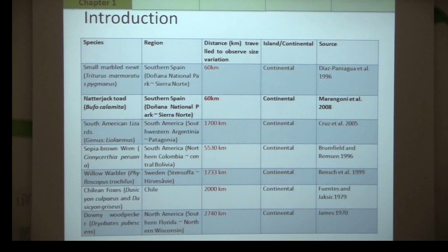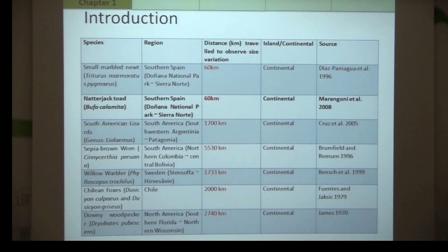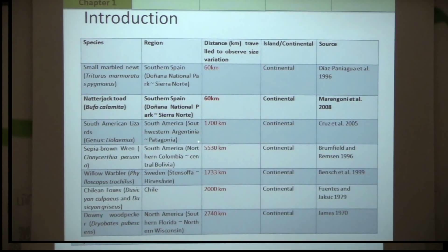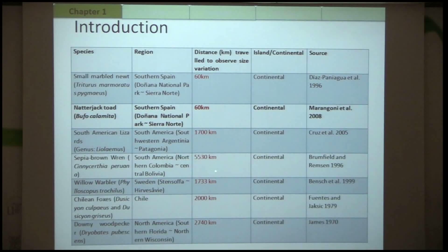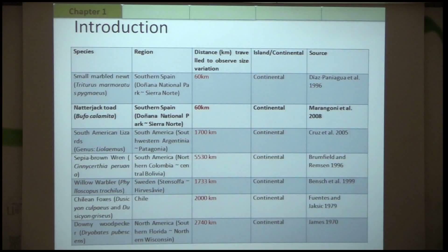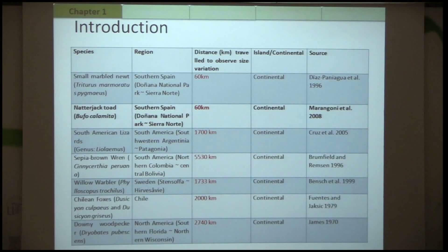What is interesting in the system of the natterjack toad in southern Spain is that usually in island systems with an efficient geographical barrier, intraspecific size variation can be observed within short distances, whereas in most continental systems you have to travel great distances. But in southern Spain, following the first reported study by Díaz-Paniagua et al., you can see a sharp, clinal intraspecific size variation within a very short distance. We are interested in what ecological factors drive this phenomenon and to what extent there is gene flow across those populations.